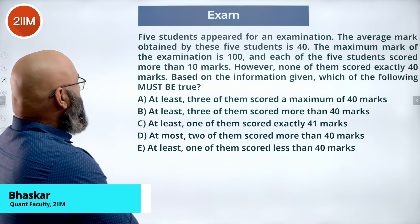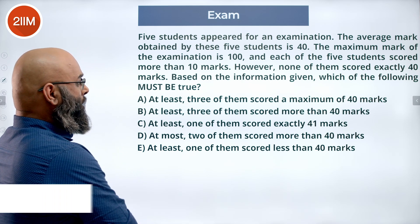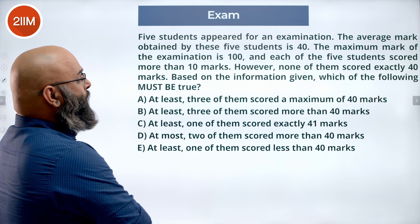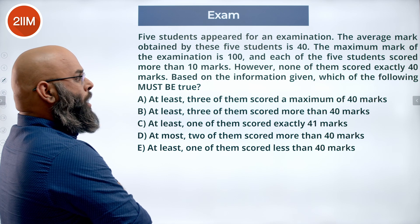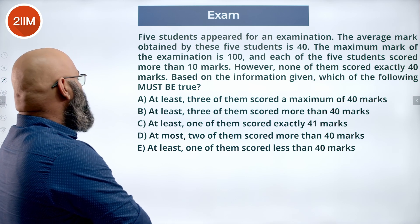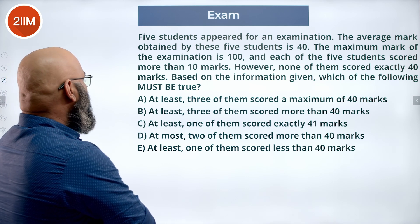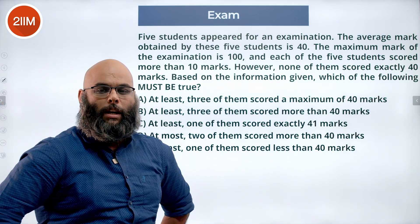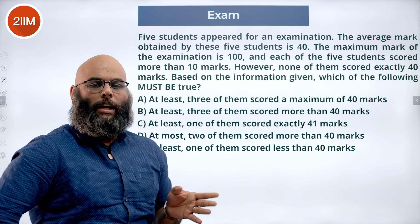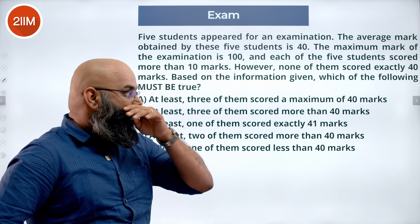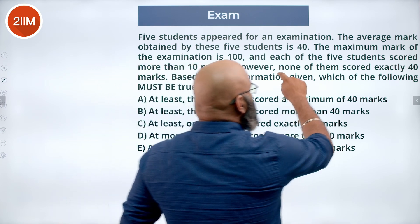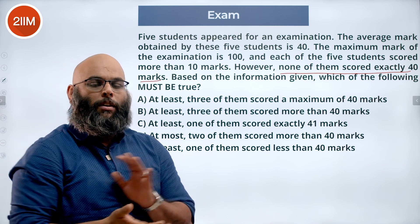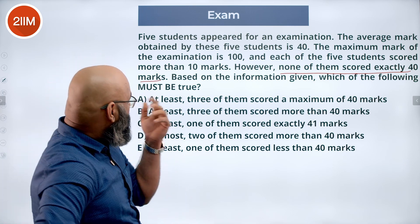5 students appeared for an examination. The average mark obtained by these 5 students is 40. The maximum mark of the examination is 100, and each of the 5 students scored more than 10 marks. However, none of them scored exactly 40. So everyone scored more than 10 but less than 100, and they can either be more than 40 or less than 40. Based on this, which of the following must be true?